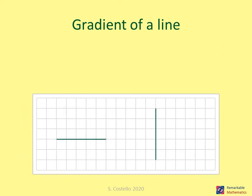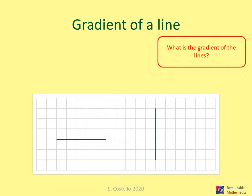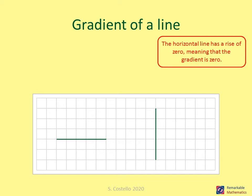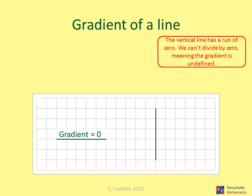Two special cases: what is the gradient of a horizontal line and a vertical line? The horizontal line has a rise of zero, so the gradient is zero over run, which is always zero — a horizontal line has a gradient of zero. The vertical line has a run of zero; we can't divide by zero, so the gradient is undefined regardless of the rise.